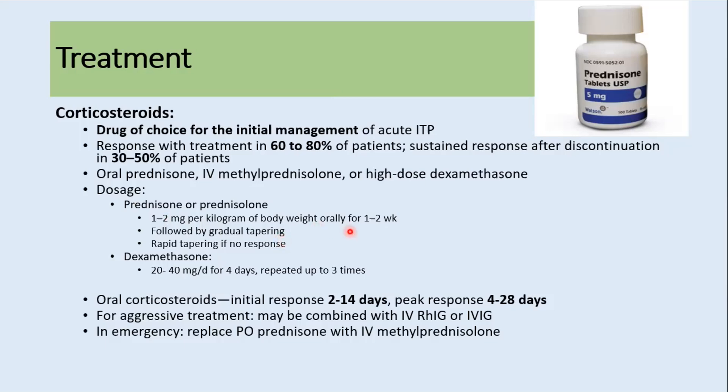If the patient does not respond to treatment, steroids can be rapidly tapered and stopped. The dose for dexamethasone is 20 to 40 mg/day for four days and can be repeated up to three times. After oral steroids, initial response occurs in around 2 to 14 days and peak response in 4 to 28 days. In patients needing aggressive treatment, steroids can be combined with RH immunoglobulin and IVIG. In emergency situations, oral steroids can be replaced with IV methylprednisolone.